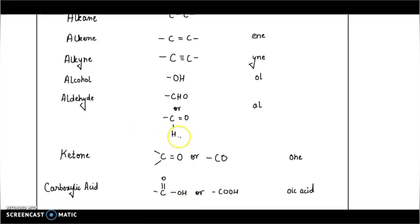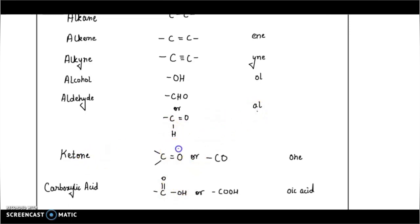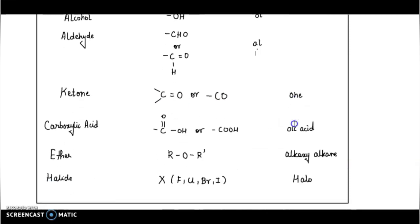Note the difference: for carboxylic acid it is -OH, and for aldehyde there is just -H — I'm talking about the extra part attached. Ketone is C=O, suffix '-one'. Carboxylic acid as discussed is COOH, suffix '-oic acid'. Ether is R-O-R', where R represents an alkyl group. Halogens — F, Cl, Br, I — are all halogens and we denote them by the prefix 'halo'.